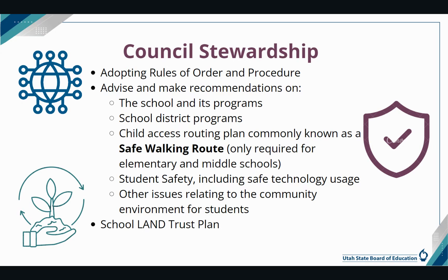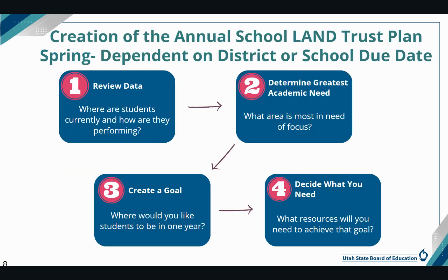Another responsibility of the council is to prepare the school land trust plan. In late winter or early spring, the council will work together to create the annual school land trust plan. When creating the plan, there are steps to be followed. First, review the student data — where are the students currently at and how are they performing? Discussions of data will naturally lead to the second step of determining the greatest academic need and what areas need the most focus. Third, by using the data and focus area, the council will create a student-centered academic goal to answer the question: where would you like your students to be in one year? Last, decide what resources are needed to help students achieve the goal.